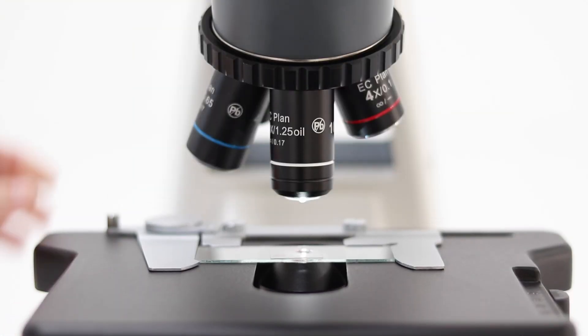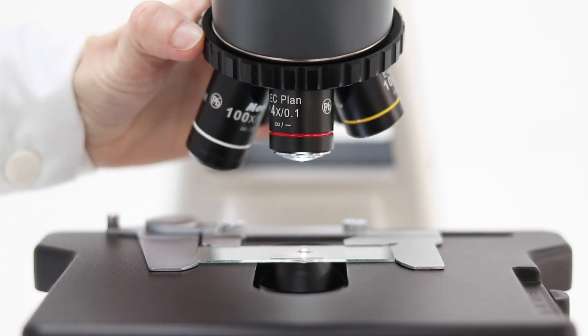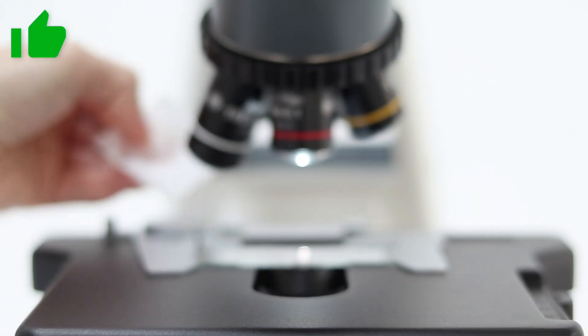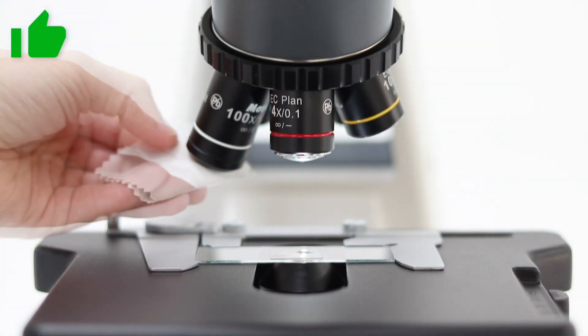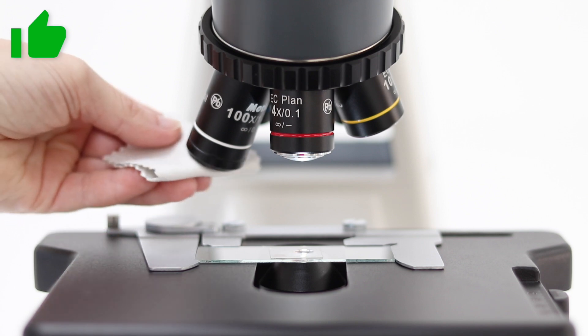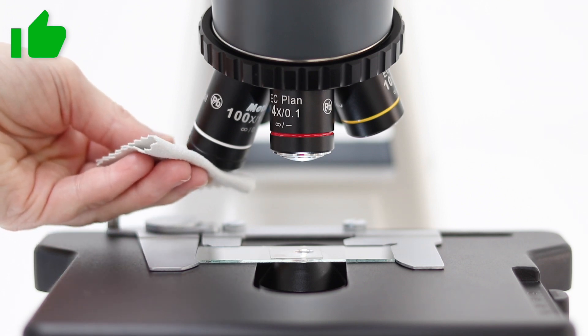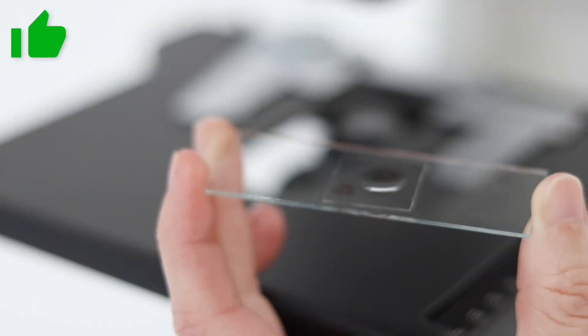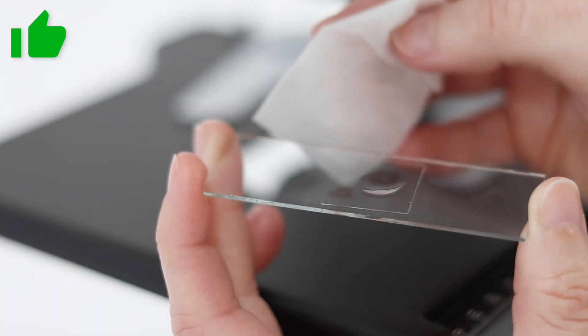Once your sample investigation is finished, the oil should be wiped off the objective using a lens cleaning tissue. Any residues should also be removed with a soft cloth moistened with petroleum benzene or absolute alcohol. The same procedure should be repeated on the specimen slide.